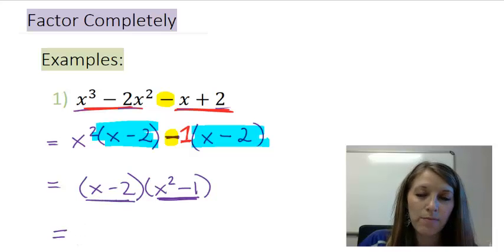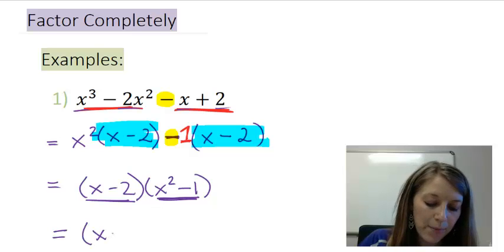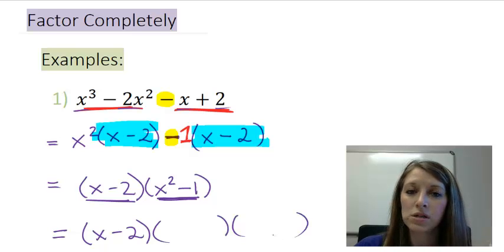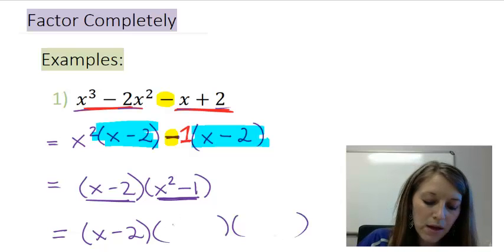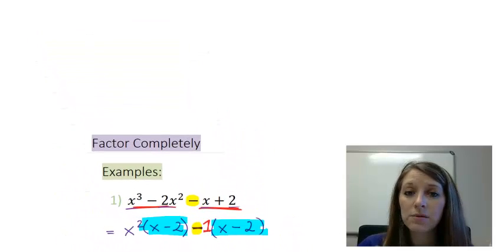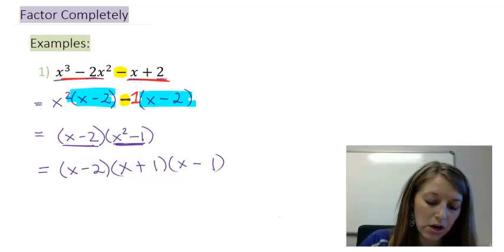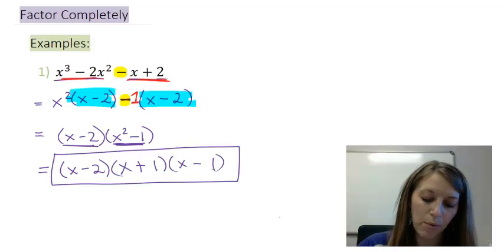I cannot factor my first set of parentheses farther because it has two terms and neither one of those are squares nor cubes. So I just copy down my first set of parentheses and I set up my two sets of parentheses to do difference of squares. X times x gives me x squared. 1 times 1 gives me 1 and these factor into conjugates meaning 1 is positive and 1 is negative. Double check to make sure I cannot factor any farther and I cannot. So this here is my final answer to example 1.